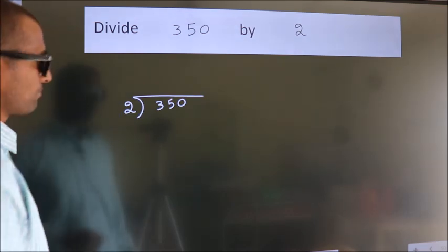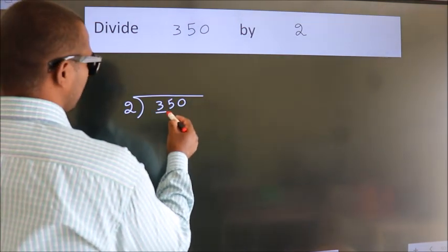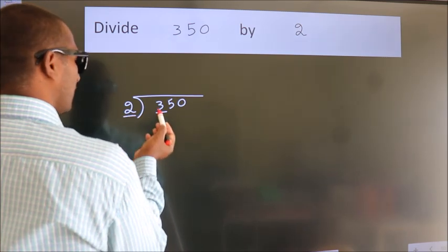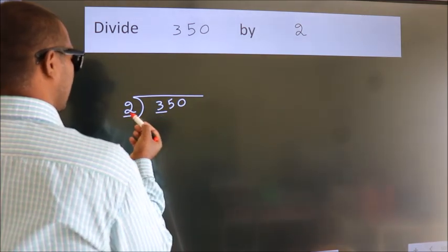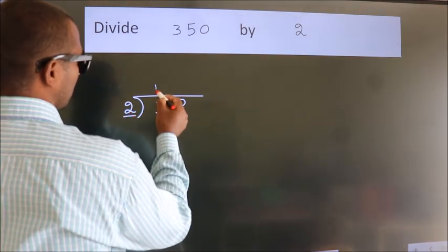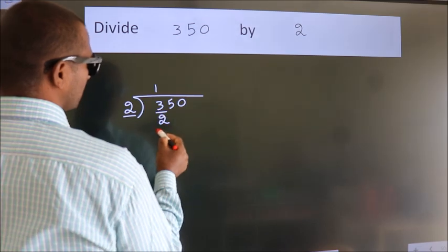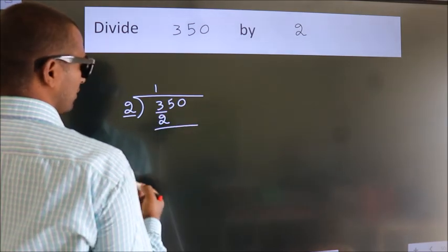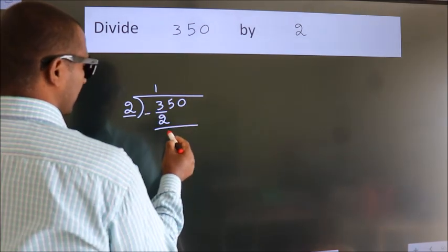Next. Here we have 3. Here 2. A number close to 3 in 2 table is 2 1s, 2. Now we should subtract. We get 1.